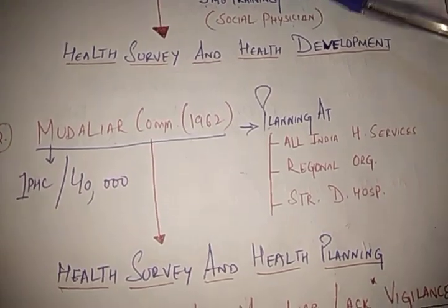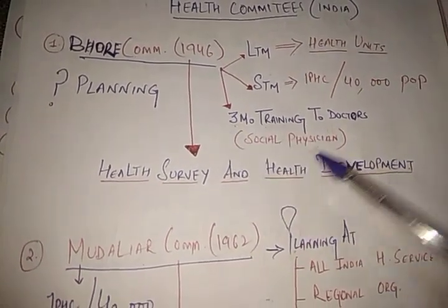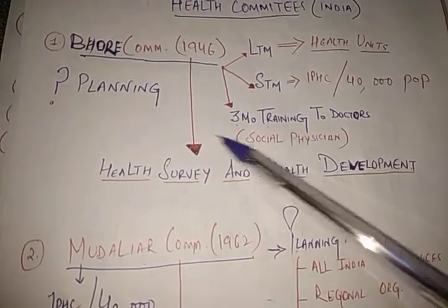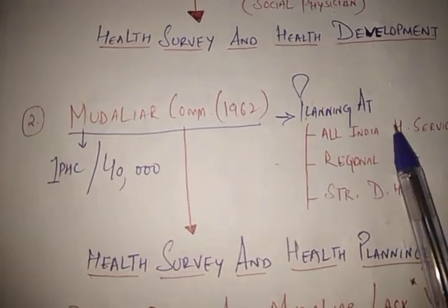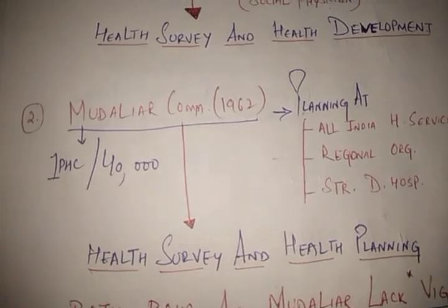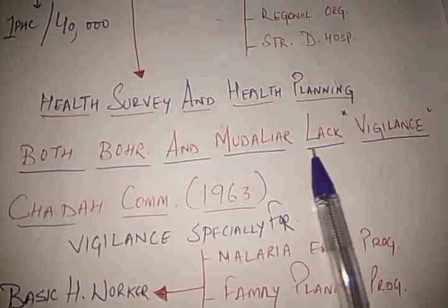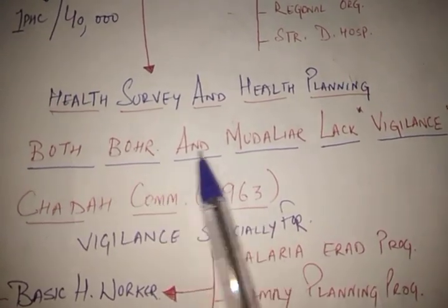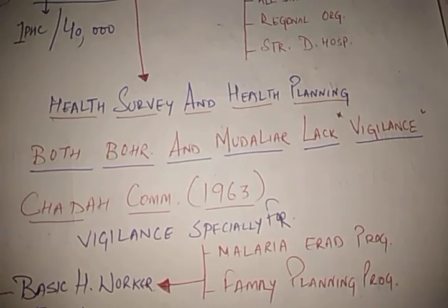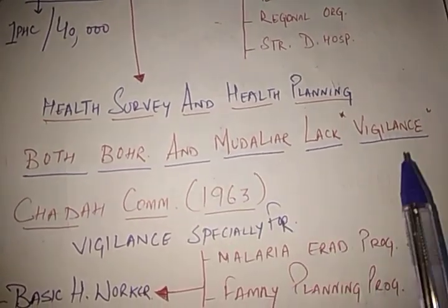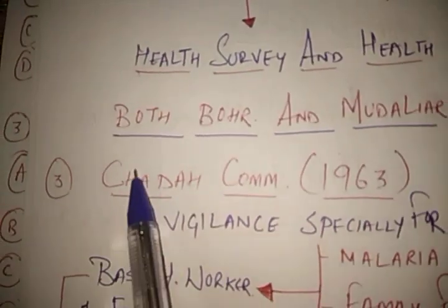To link the two: the Bhore Committee provided the services but had no planning to strengthen them, so the Mudaliar Committee came and did planning at the national, state, and district levels. However, both the Bhore and Mudaliar committees lacked vigilance — there was no one to look after these services. To provide that vigilance, the more advanced Chadha Committee came, and that is the third health committee.